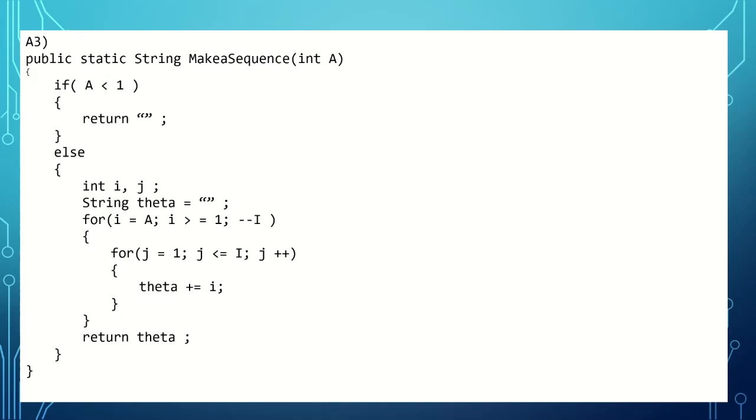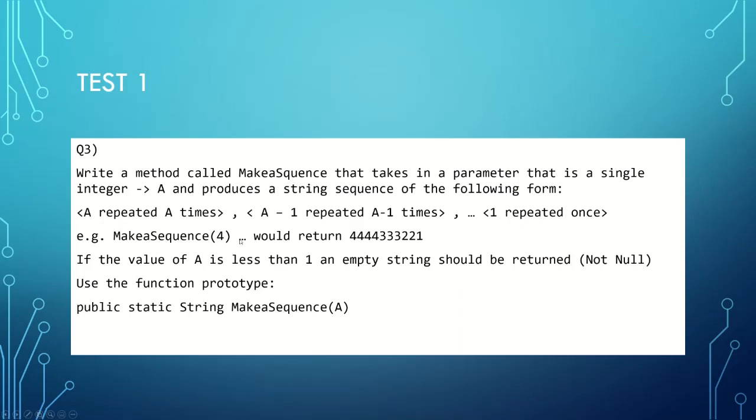We have our outside for loop where i is going from our input parameter value a all the way down to one, and it's going to be going down by one each time. Within that, we have a nested for loop where j goes all the way from one all the way up to our value i, and it goes up by one each time, incrementing by one each time. Each time it increments, it's going to be printing our value i to our string theta.